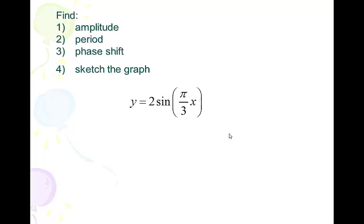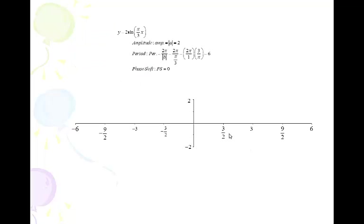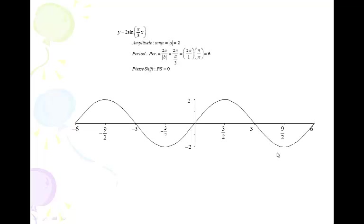Here's y = 2sin(π/3 · x) — again, no c value, so no phase shift. Amplitude is 2. Period is 2π divided by π/3; multiplying by the reciprocal gives 6. So my period is 6, no phase shift, amplitude is 2. I put 6 at the fourth hash mark; half of 6 is 3, half of 3 is 3/2. My quarter marks are at 3/2, 6/2, and 9/2. It's a sine curve with no phase shift, so we go through the origin and up to the right in quarter period increments. They all look the same — all we do is change the x-axis and y-axis scaling.